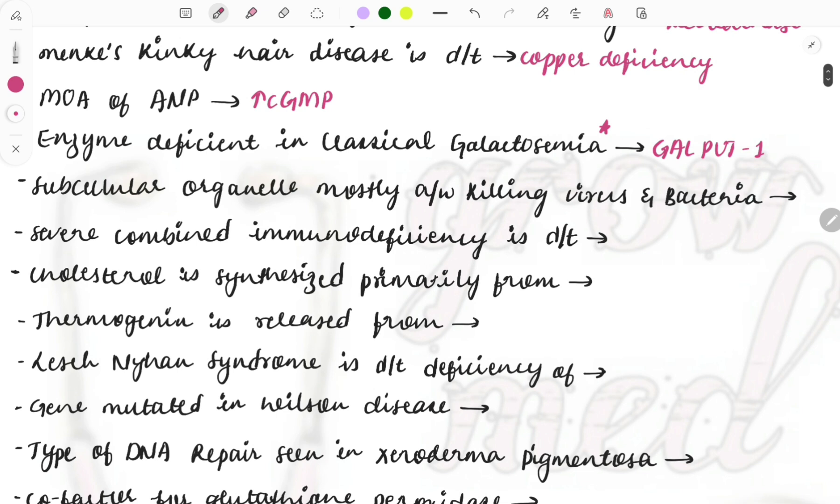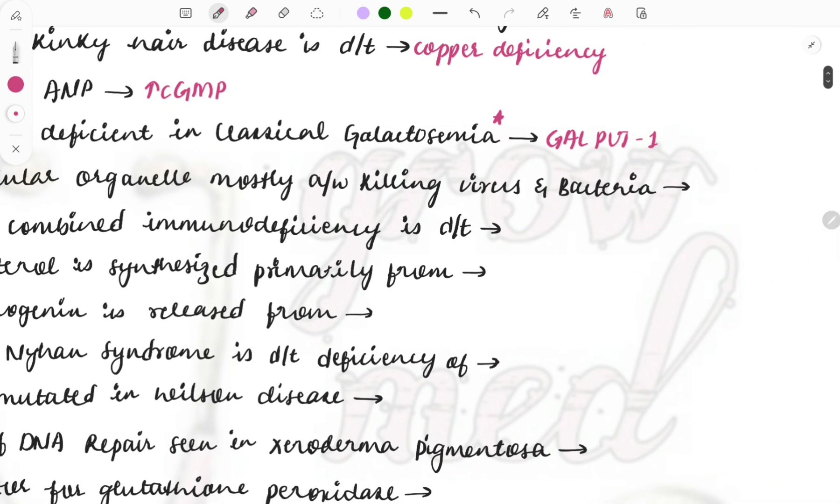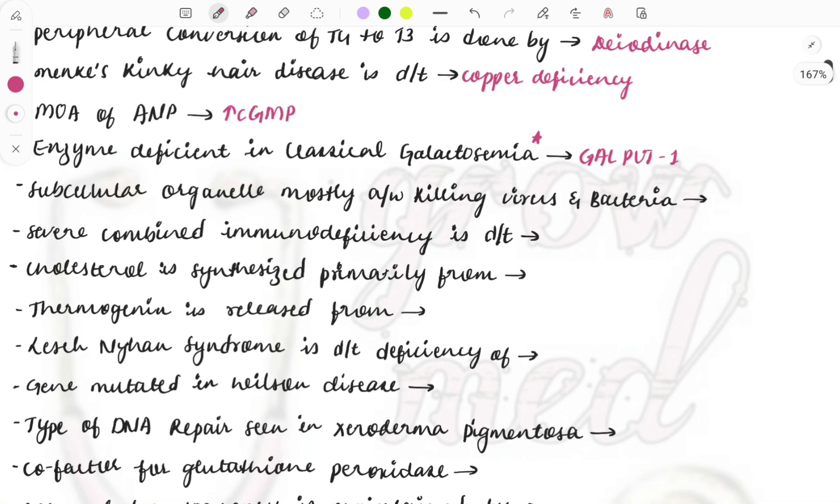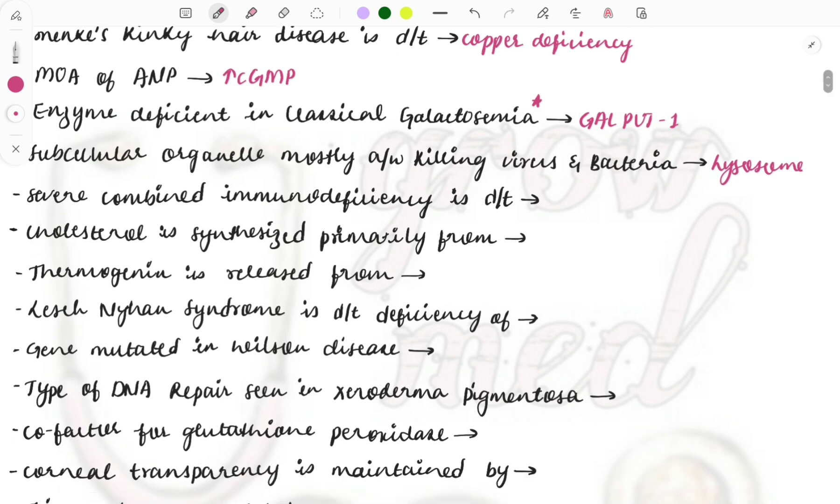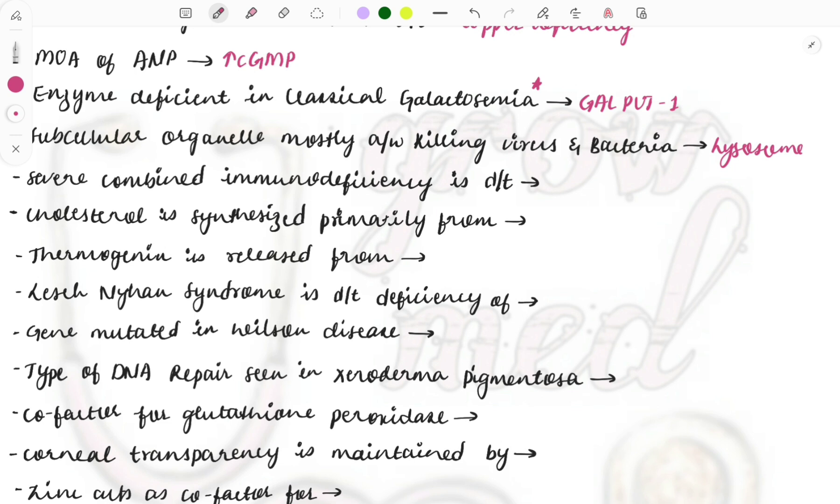Subcellular organelle mostly associated with killing of viruses and bacteria? It is the lysosome. Lysosome kills the bacteria and also engulfs bacteria and viruses. The function of organelles is also important - like mitochondria what does it do, then endoplasmic reticulum what does it do - do read all those things also.